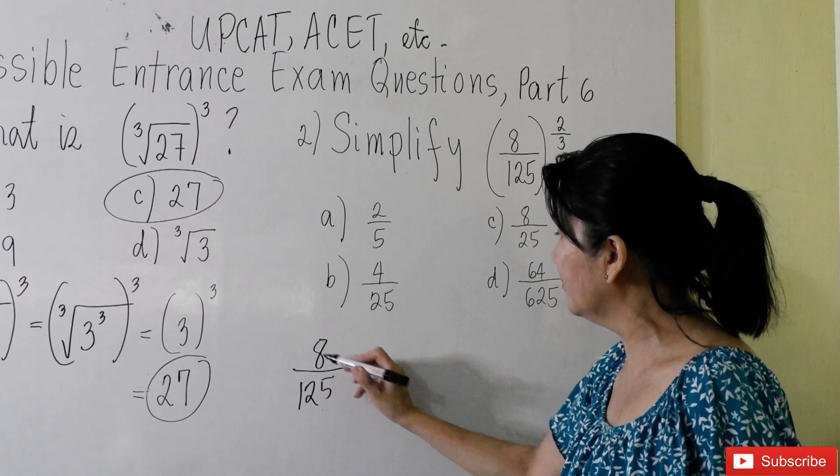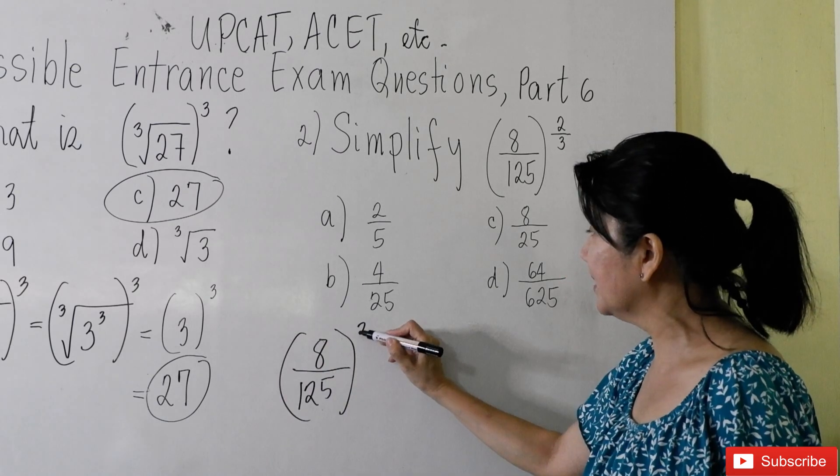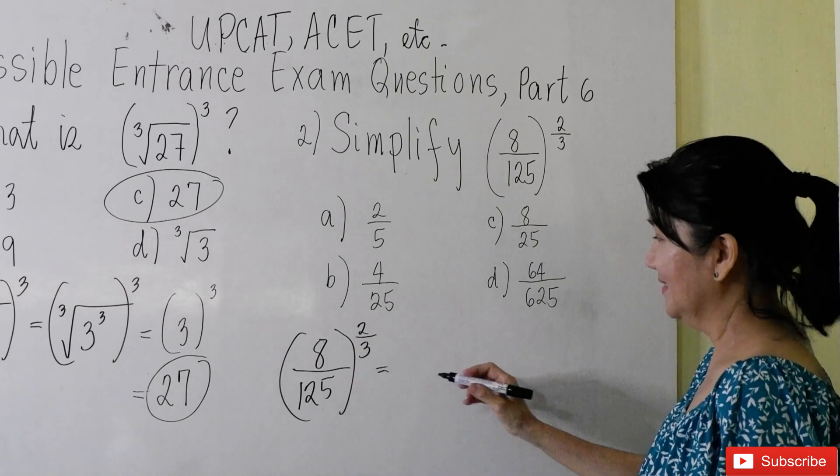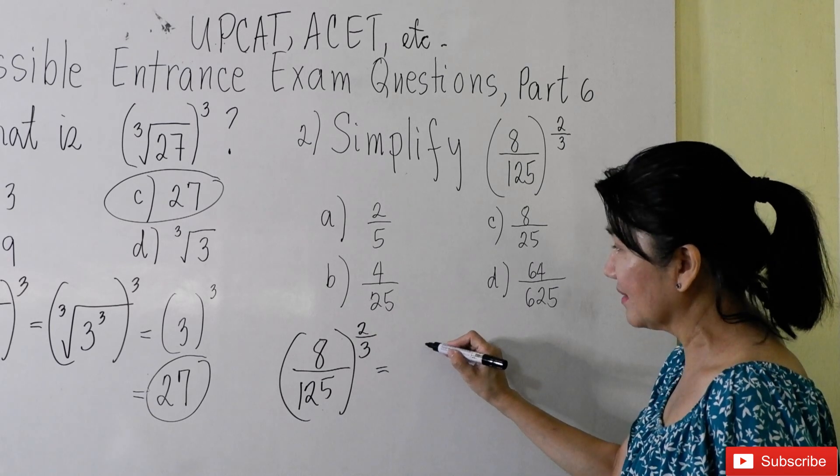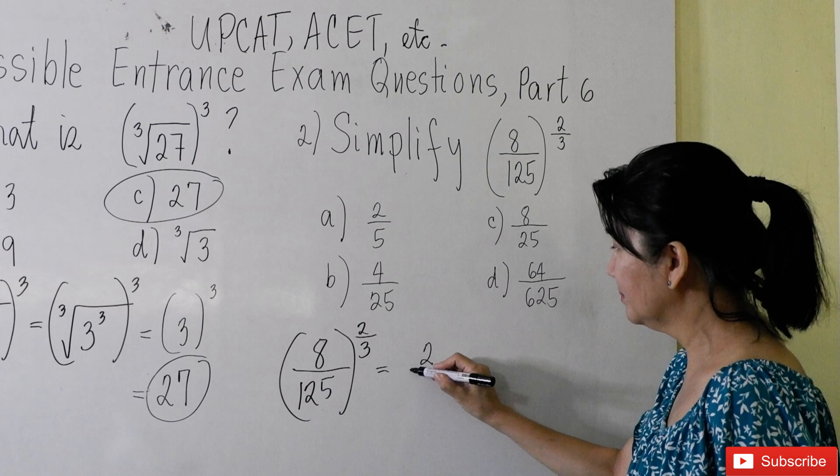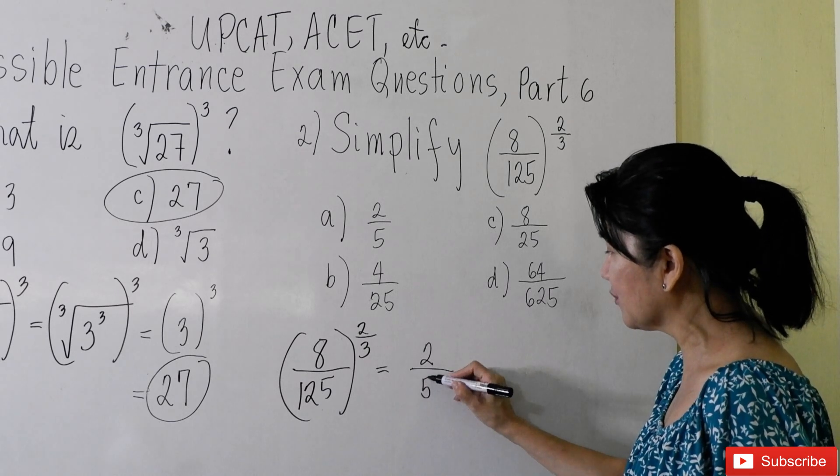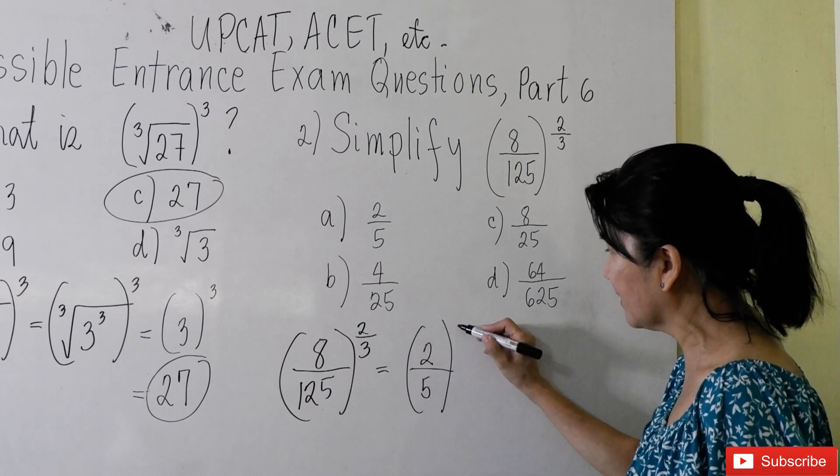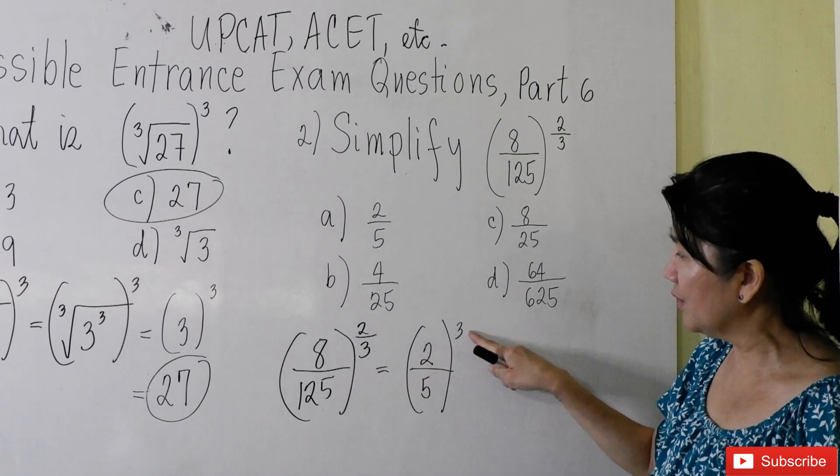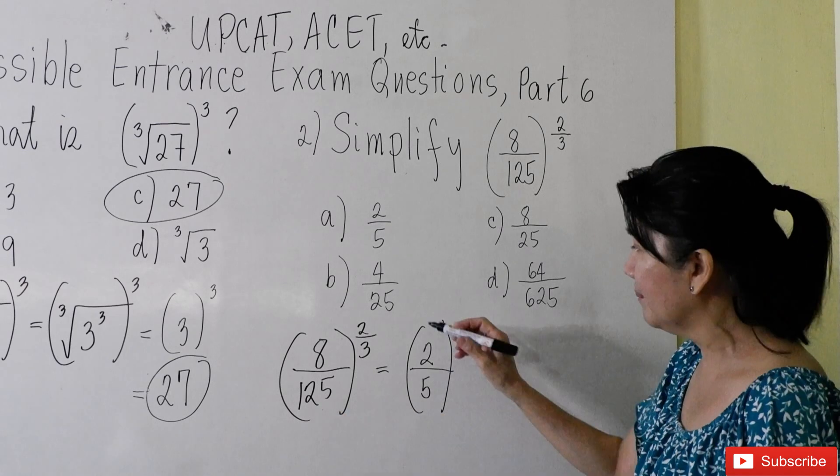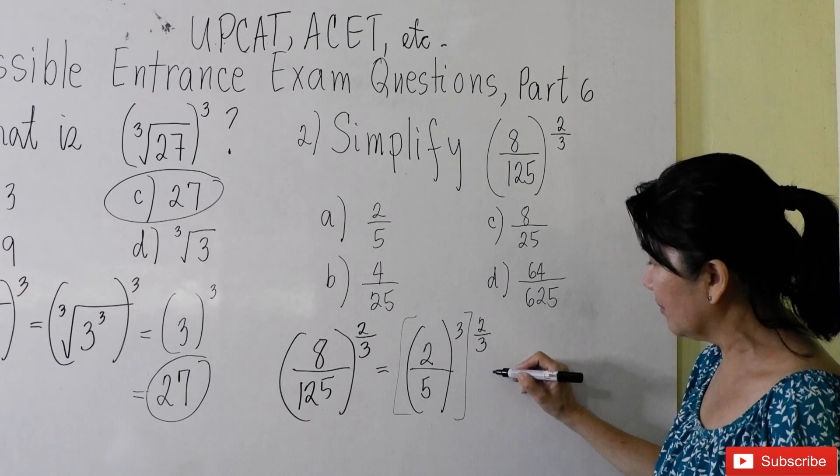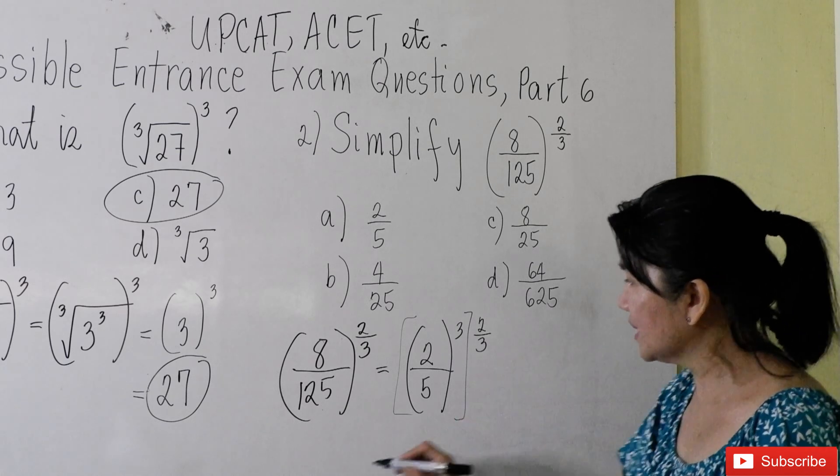You can rewrite this as an exponential. You know too well that 8 is just 2 cubed, and 125 is just 5 cubed. So you can rewrite it this way. Repeat: 2 cubed is 8, 5 cubed is 125. And everything is raised to the two-thirds. Now, observe. What do you see?